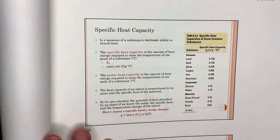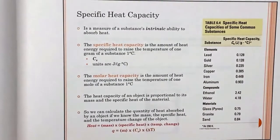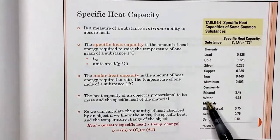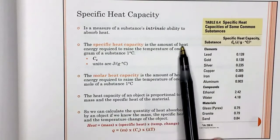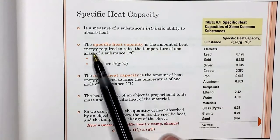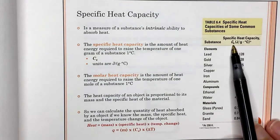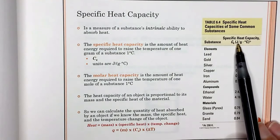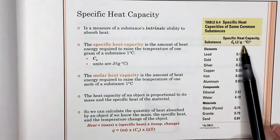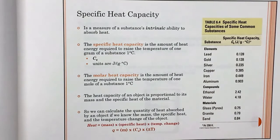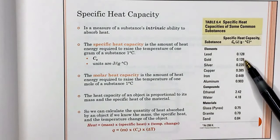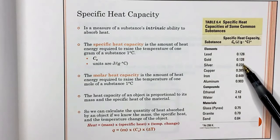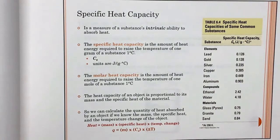Looking at a chart of specific heat capacities: water is 4.18 joules per gram·Celsius, while aluminum is only 0.9 and metals like gold, silver, and lead are much smaller. Metals tend to change temperature much faster. Specific heat capacity tells you the amount of heat required to raise one gram by one degree Celsius.